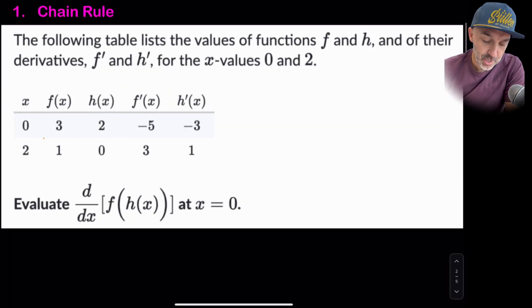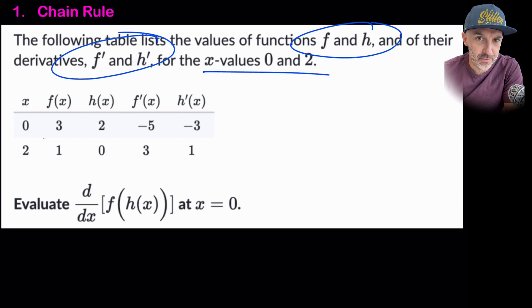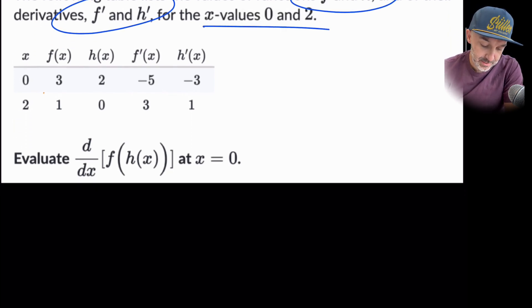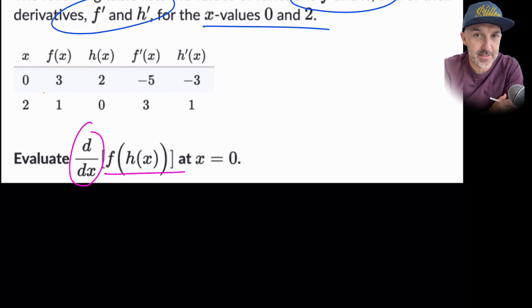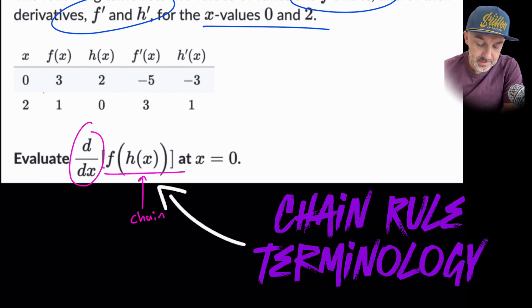The first one is chain rule, that's the one that you see in the thumbnail. So again they've given us f and h and the derivatives and they have given us the table of values for 0 and 2. So what this is asking us to do in the question here is evaluate the derivative of f of h of x. So we've got to understand straight away there that this is a chain rule problem because it is a function within another function.